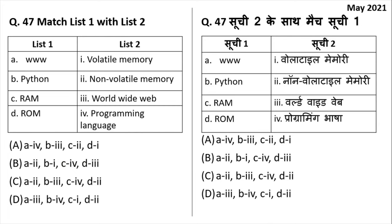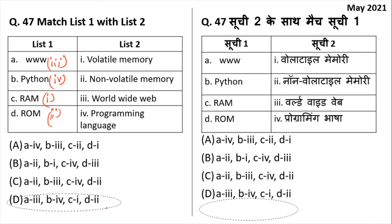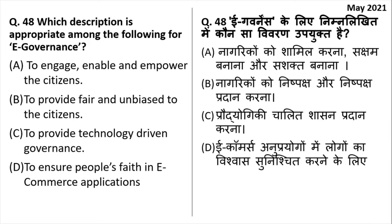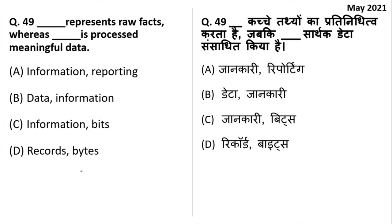Match the following: WWW stands for World Wide Web — option 3. Python is a programming language — option 4. RAM is Random Access Memory and is a volatile memory — option 1. ROM is a non-volatile memory — option 2. The answer is 3, 4, 1, 2 — D is the right answer. Which description is appropriate for e-governance? When governance is done through the internet it is e-governance; the best description is option A: to engage, enable, and empower the citizens. Blank represents raw facts — that is data. When data is processed, it becomes information. The right answer is B: first blank is data, second blank is information.